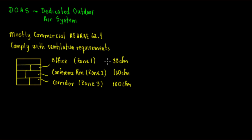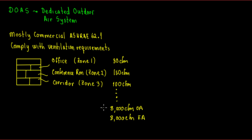After you complete your ventilation spreadsheet for all spaces, you might end up with a total of 8,000 CFM of outside air (OA). You also need to exhaust that air. For buildings, we don't try to make it neutral — we try to make it slightly positive pressure to avoid infiltration.